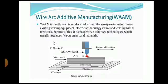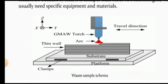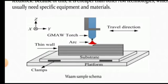Now, wire arc additive manufacturing is a type of additive manufacturing. WAAM is mostly used in modern industries like aerospace industries — this concept is new and mostly used in aerospace industry. It uses existing welding equipment, electric arc as an energy source and welding wire as a feedstock. We can perform this manufacturing process with existing welding processes like GMAW (gas metal arc welding), GTAW (gas tungsten arc welding) or PAW (plasma arc welding). With these three processes, we can deposit the material in layer by layer fashion.